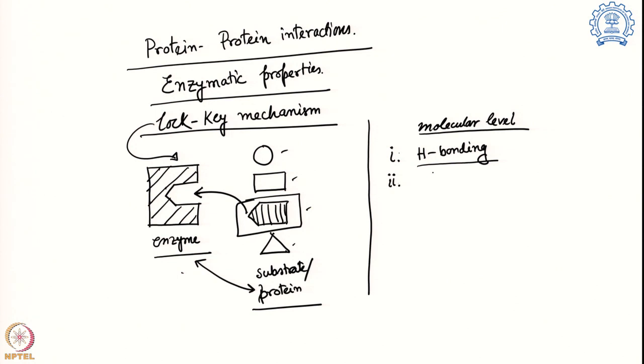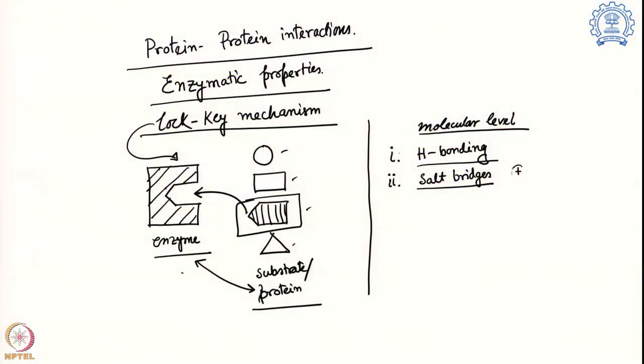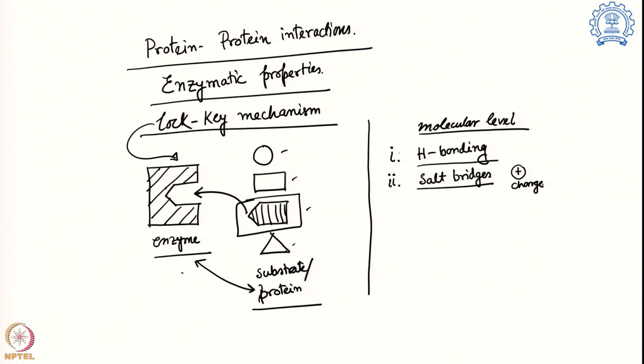The next interaction is salt bridges. In salt bridges, two different parts of the molecules come together: one creates a positive charge and the other creates a negative charge, and they create a favorable electrostatic interaction. For example, arginine and lysine with their side chains create a positive charge, whereas aspartate and glutamate create a carboxylate group that is negative in charge. Bringing arginine or lysine together with aspartate or glutamate gives a very nice electrostatic interaction known as a salt bridge. That is another common factor here.